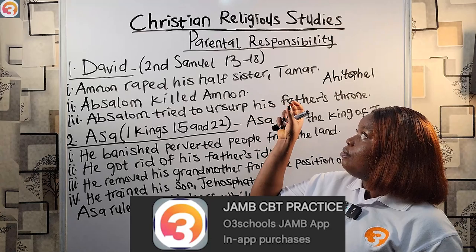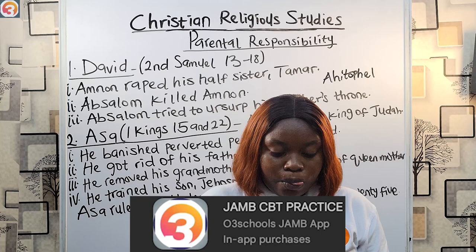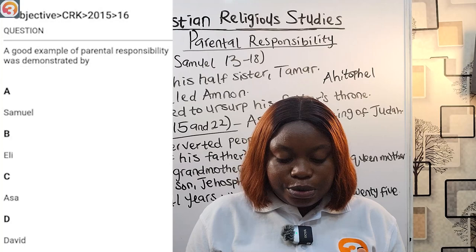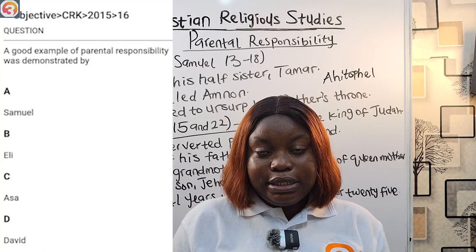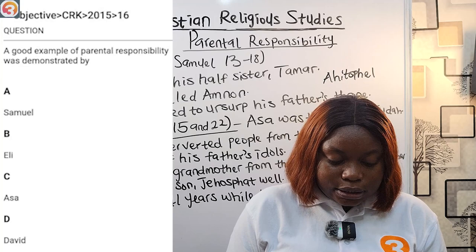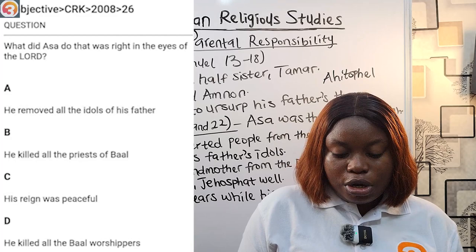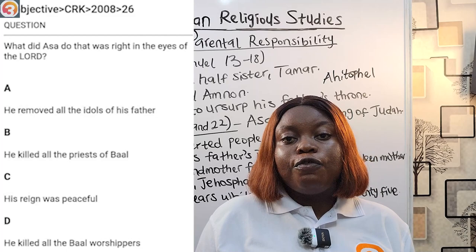We'll now head over to the O3 Schools Jam app to check out some questions asked under the topic of parental responsibility. If you haven't downloaded the app, do yourself a favor and download it now. Here's a question from 2015: 'A good example of parental responsibility was demonstrated by: A) Samuel, B) Eli, C) Asa, D) David.' The answer is C — Asa. Another question from 2008: 'What did Asa do that was right in the eyes of the Lord?' The answer is A — he removed all the idols of his father.